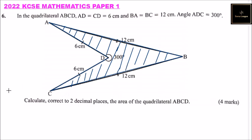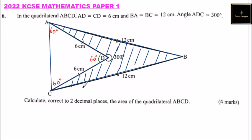If we join A and C, this becomes a triangle — an isosceles triangle. The angle at D: since the whole angle should be 360 degrees and the reflex angle is 300, this angle ADC is 60 degrees. Since the base angles are equal, both base angles are also 60 degrees, making triangle ADC an equilateral triangle. Therefore side AC is also equal to six centimeters, since all sides of an equilateral triangle are equal.